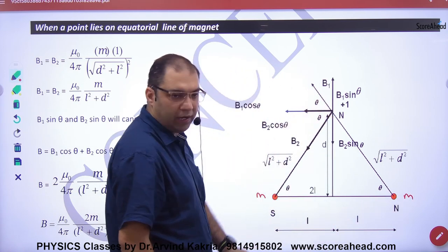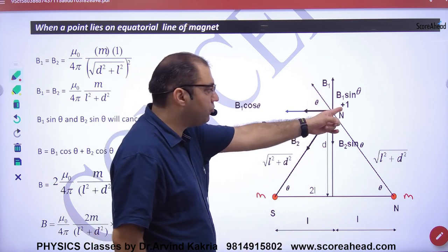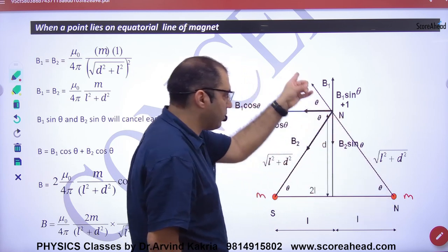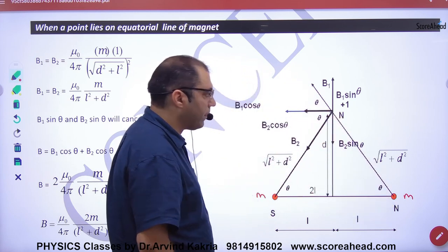You have to find the field at d-distance. Wherever you want to find, there is pole strength 1. An imaginary pole is north. North will repel north. South will attract north.